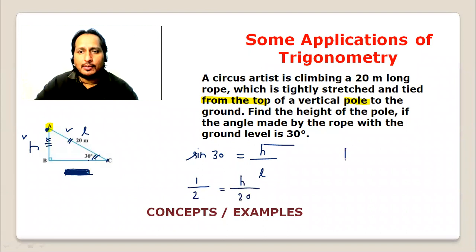Sin 30 equals H over L. So we get H equals 10 meters.